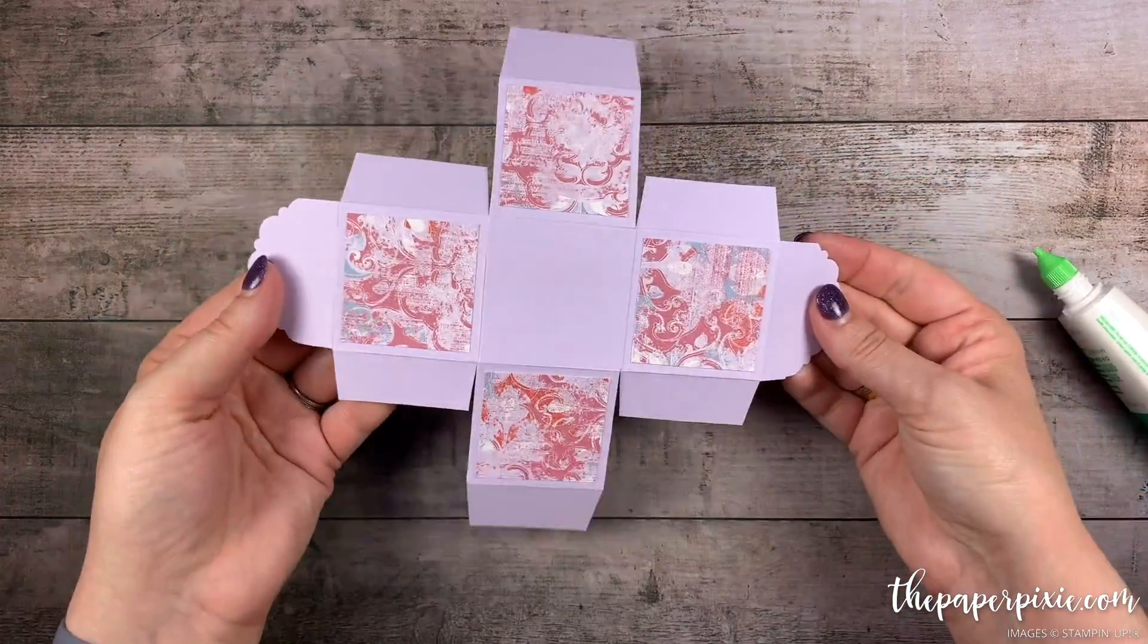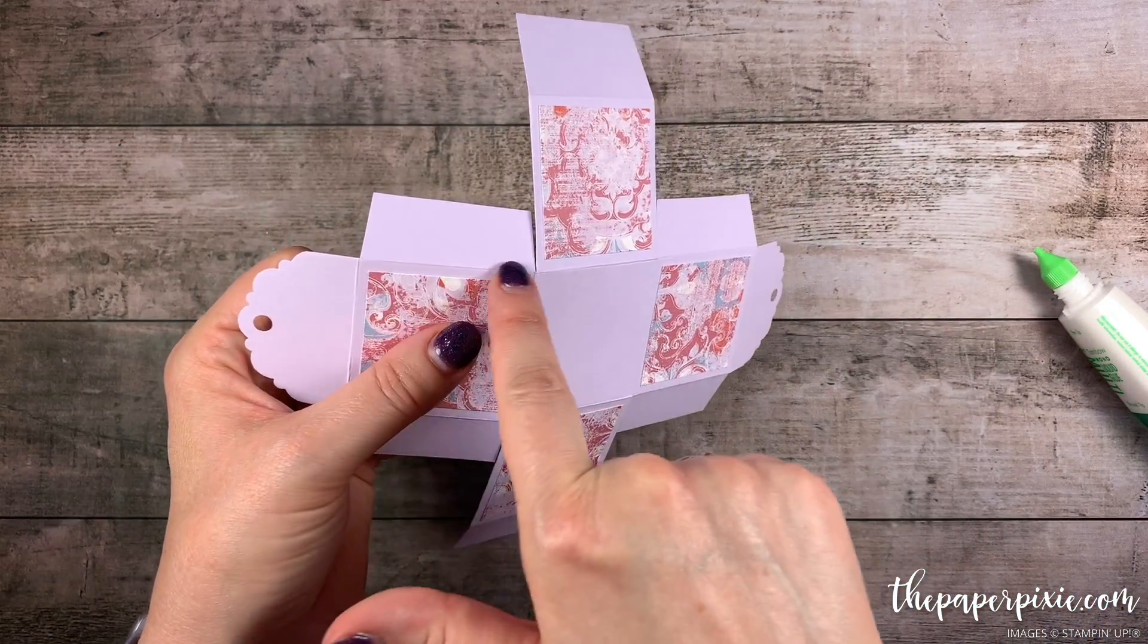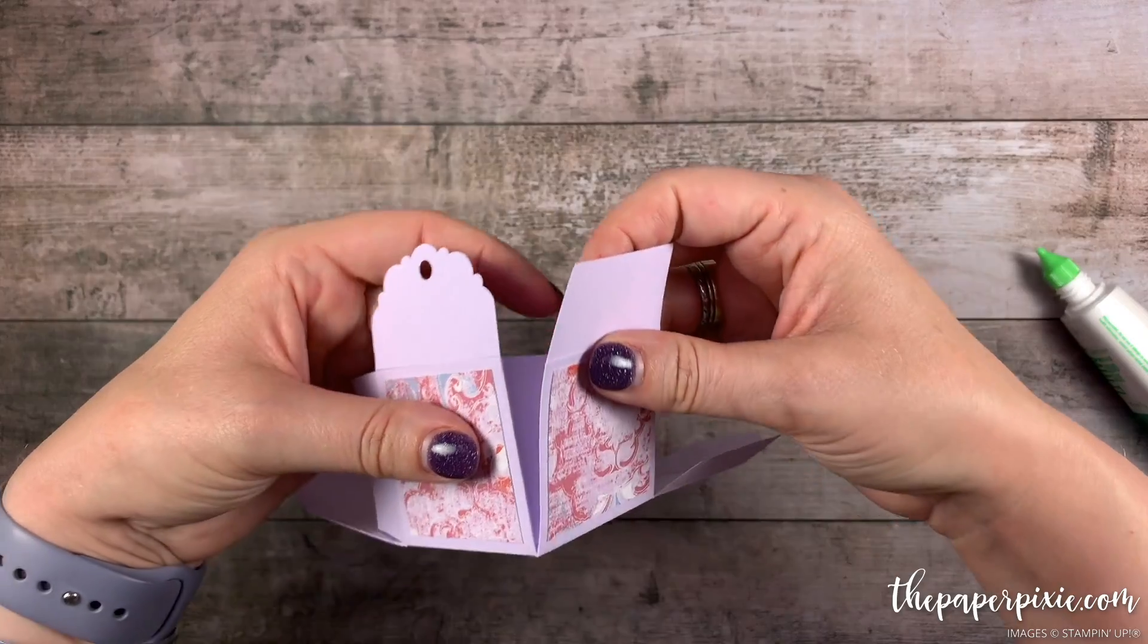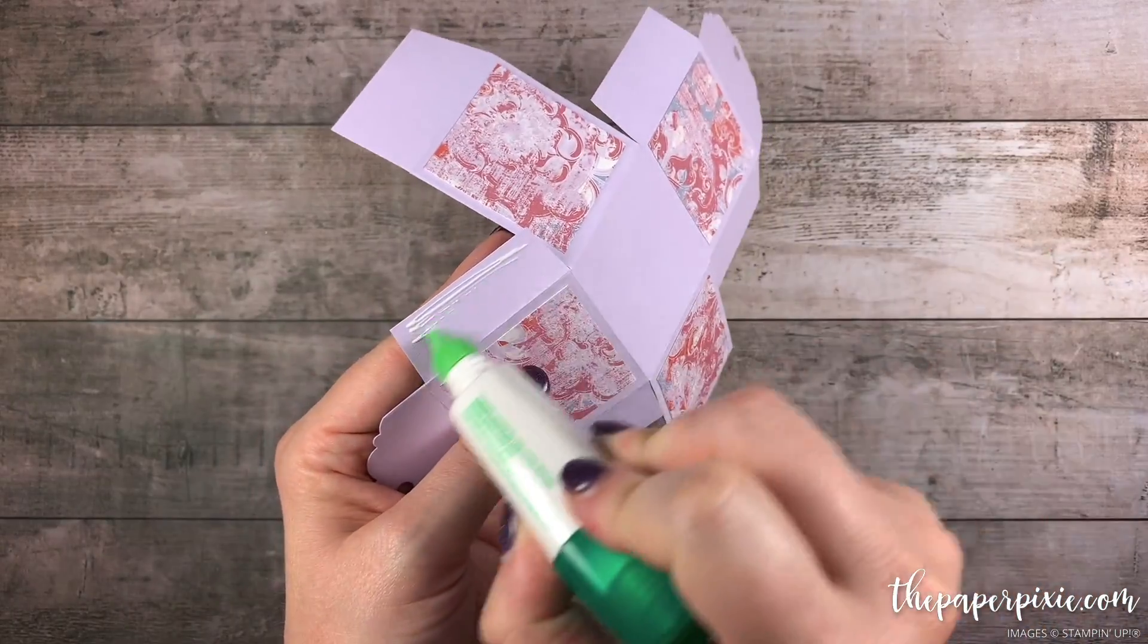Okay now we're ready to put the box together. So I'm going to put glue on each of these tabs. We're going to line up this score line with this cut edge like so to form our box. And I'm just going to work my way around to all 4 tabs.